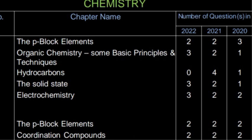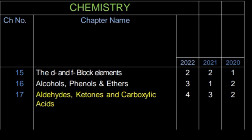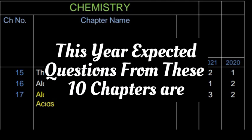Solid state, electrochemistry, p-block elements, coordination compounds, d and f block elements, alcohols phenols and ethers, aldehydes ketones and carboxylic acids. These 17 chapters are the most important chapters this year. Expected questions from these chapters.